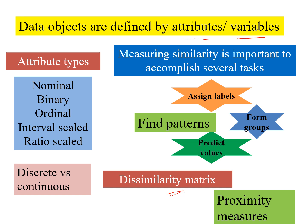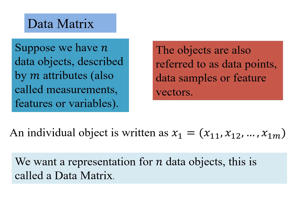For this, dissimilarity matrix must be computed among the data objects, and proximity measures will be defined for this purpose. What is the data matrix? If you have n data objects or data points described by m attributes, so one data point d1 has m attributes. You can call them feature 1, feature 2, feature 5 if we have 5 attributes. We have such n data objects.